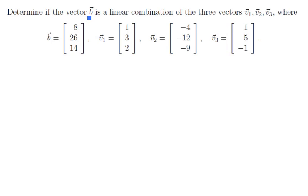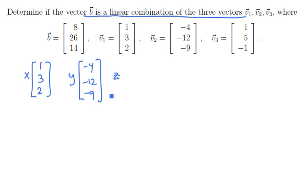Now remember that the question is asking whether or not b is a linear combination. So are there constants x, y, and z so that if we scale the vectors v1, which is [1, 3, 2] by x, and scale the vector v2, [-4, -12, -9] by y, and scale vector v3, which is [1, 5, -1] by z,